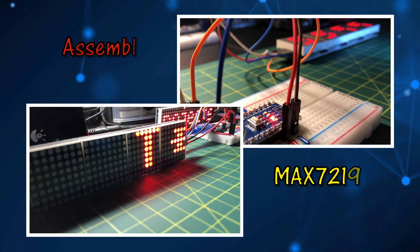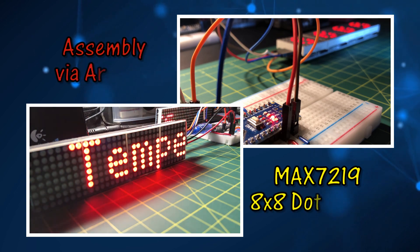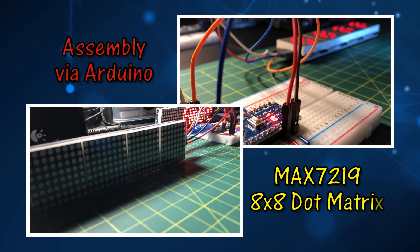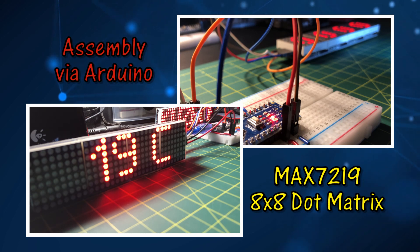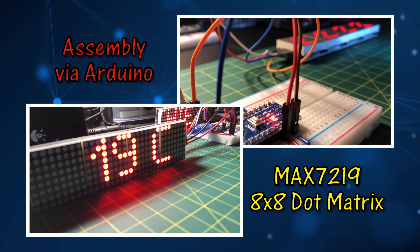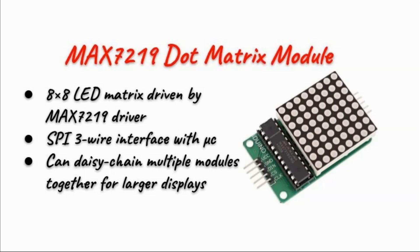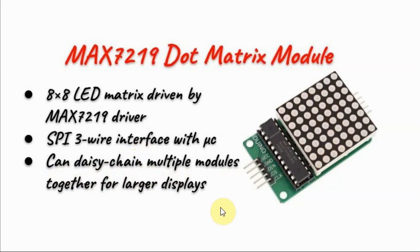In this video, the MAX7219 8x8 dot matrix module is programmed in assembly to display digits from 0 to 9. The MAX7219 dot matrix module is made of an 8x8 LED matrix driven by the MAX7219 driver. It is interfaced with a microcontroller using a three-wire SPI, and we can daisy chain multiple modules to get a larger display.